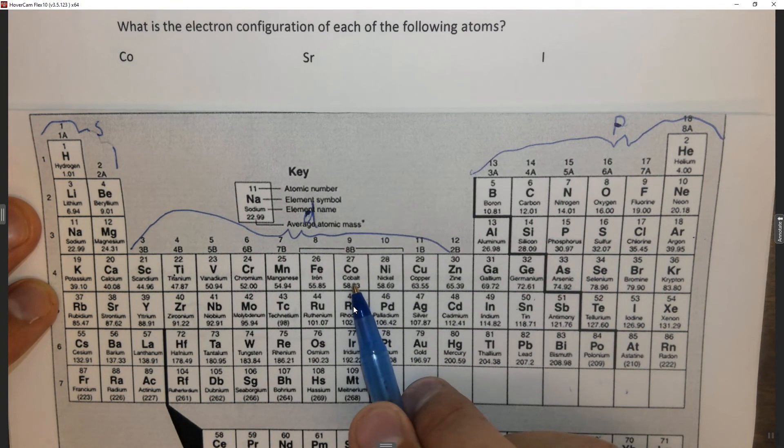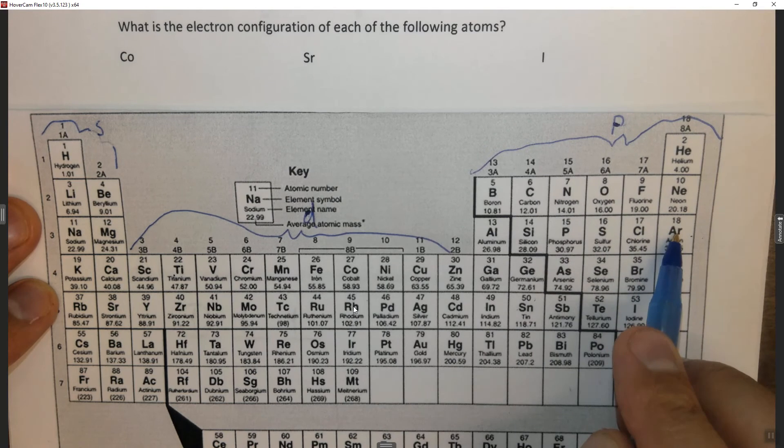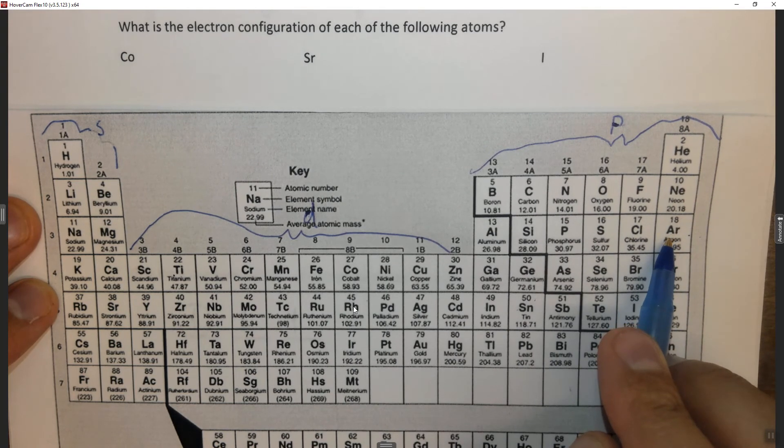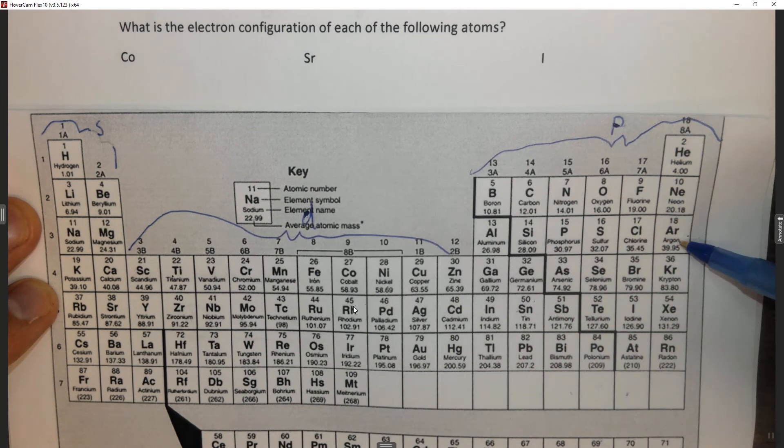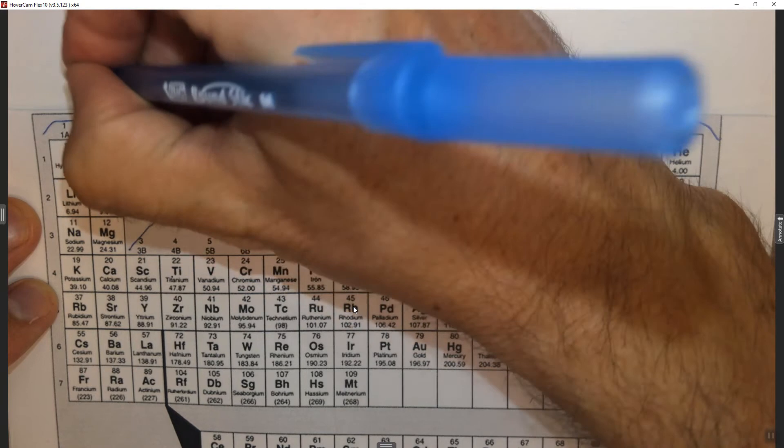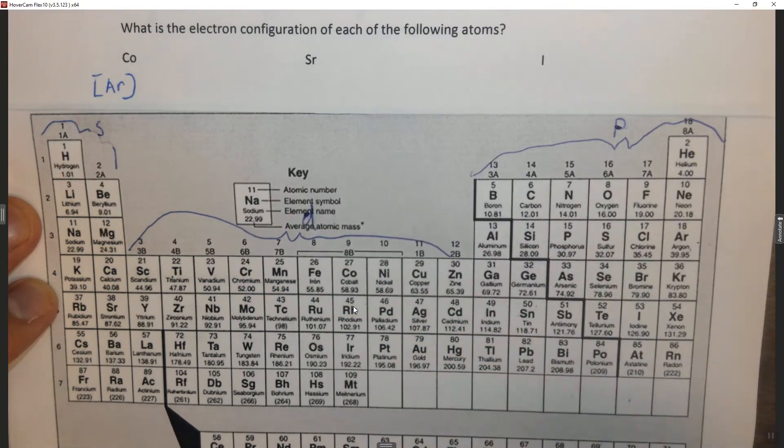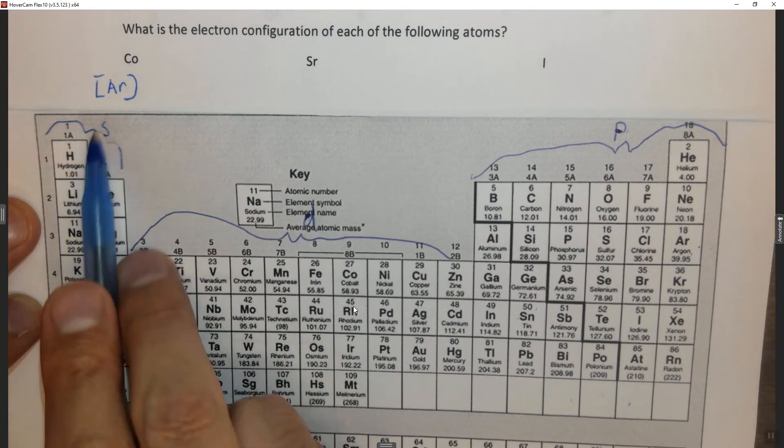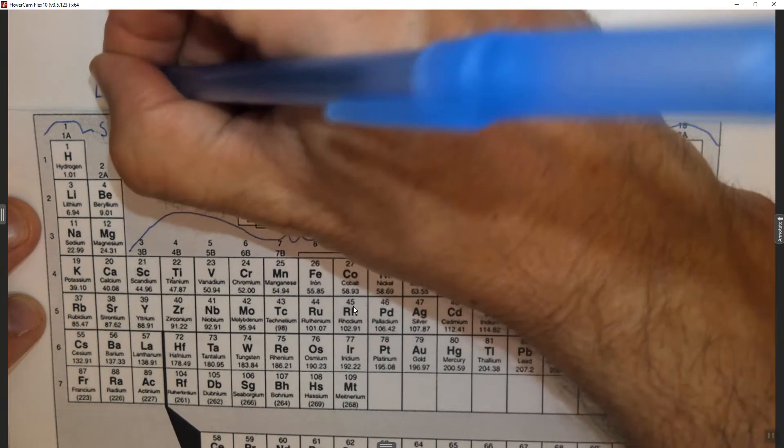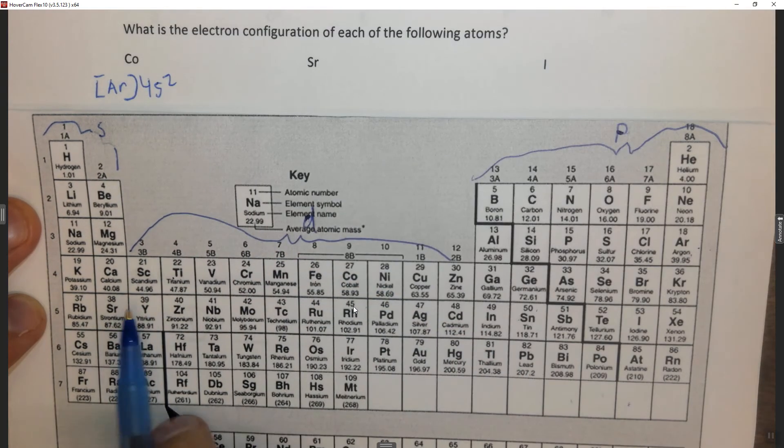To find the electron configuration, what we do is we write the noble gas in one row above in parentheses. So this is going to start with argon. Then we're going to get to the 4s, so 4s2. Then the 3d, remember the d is one less.